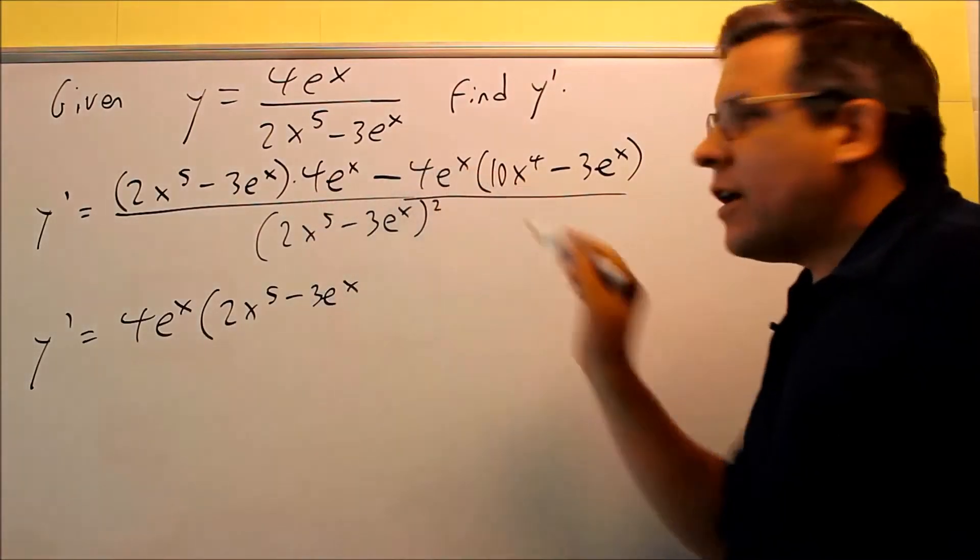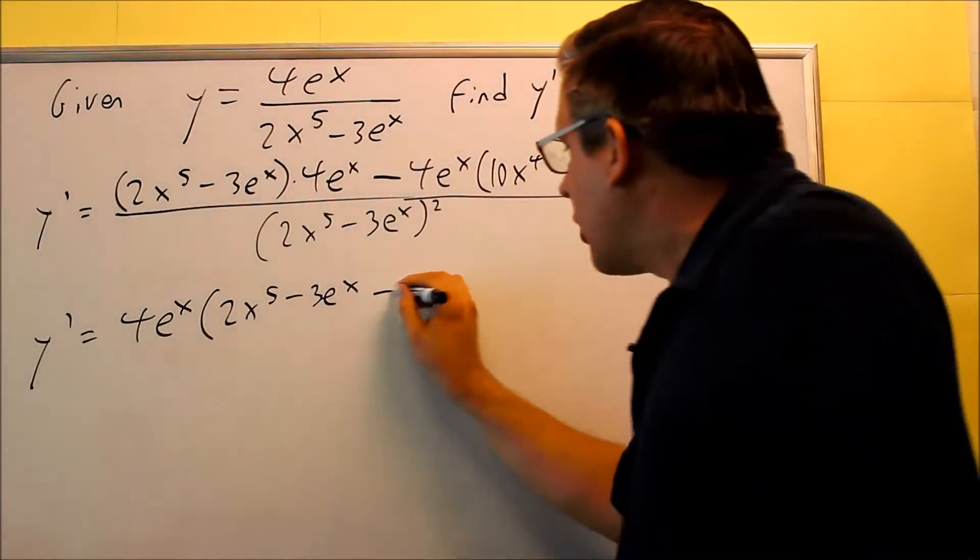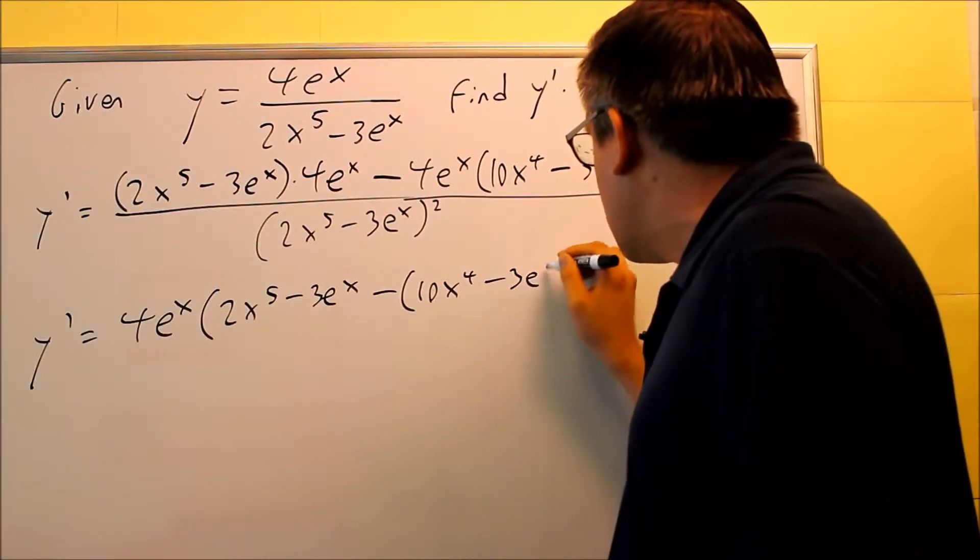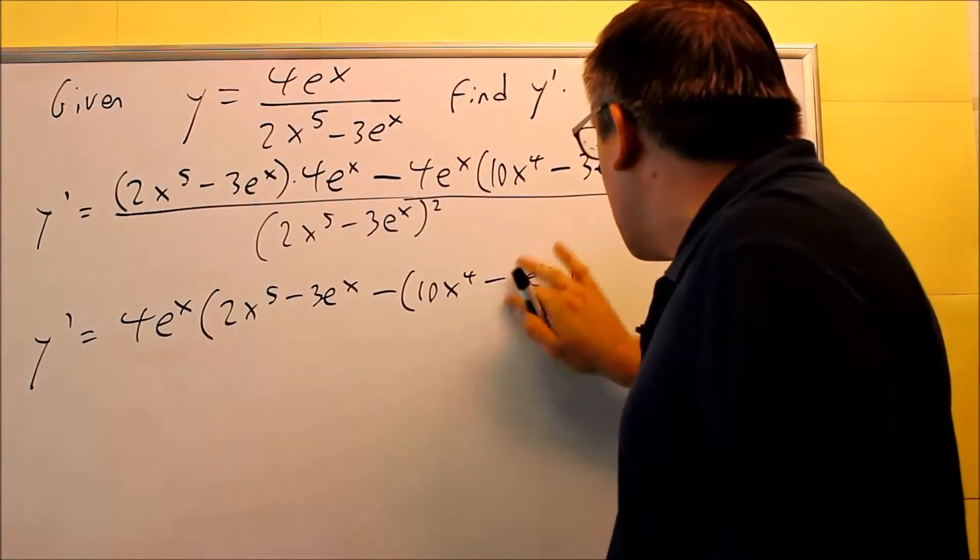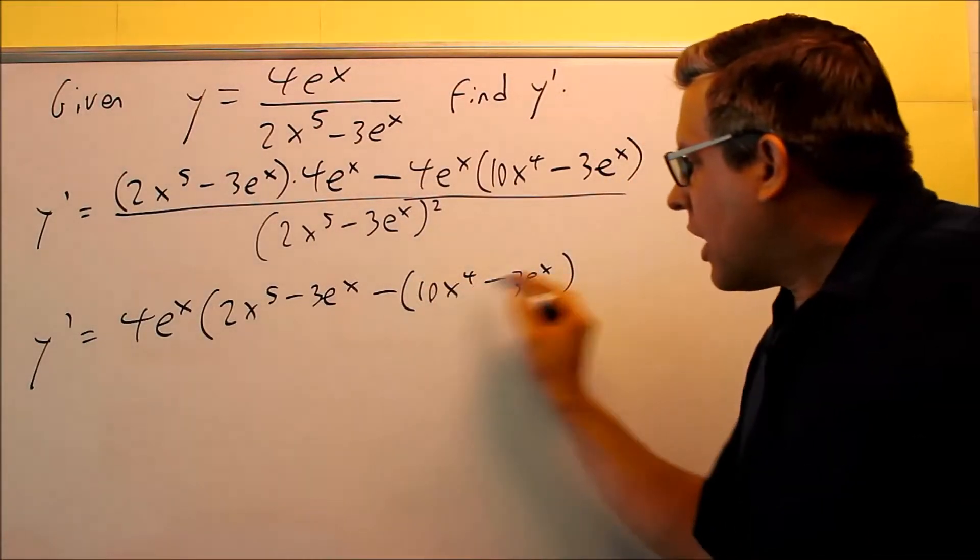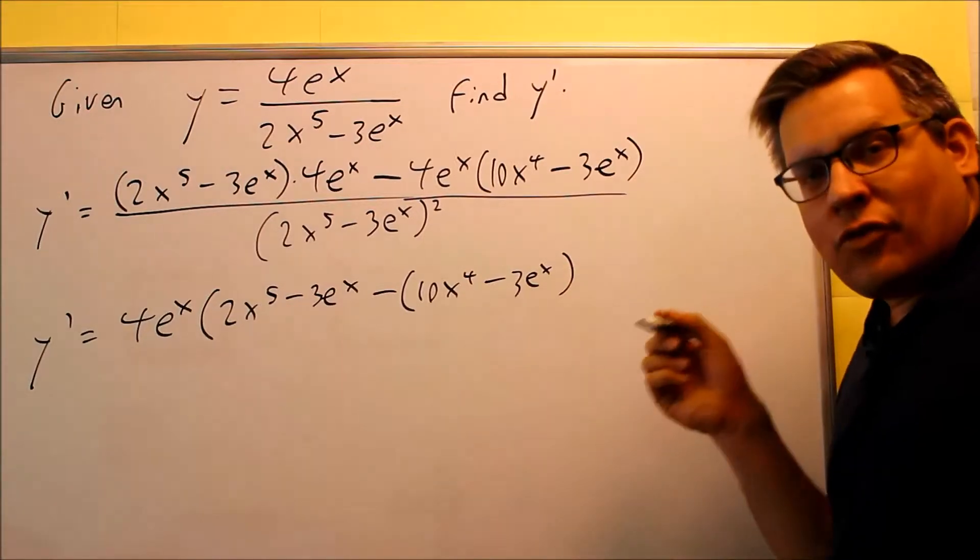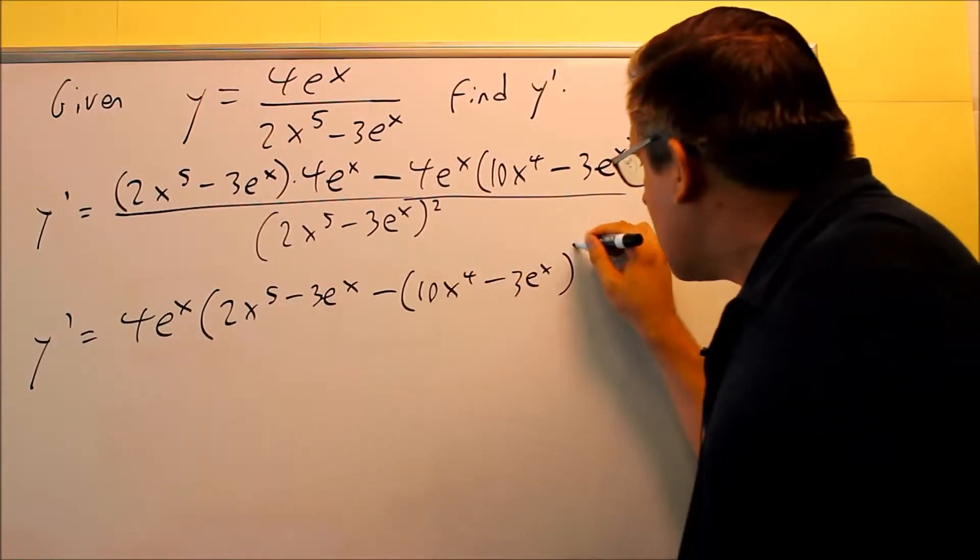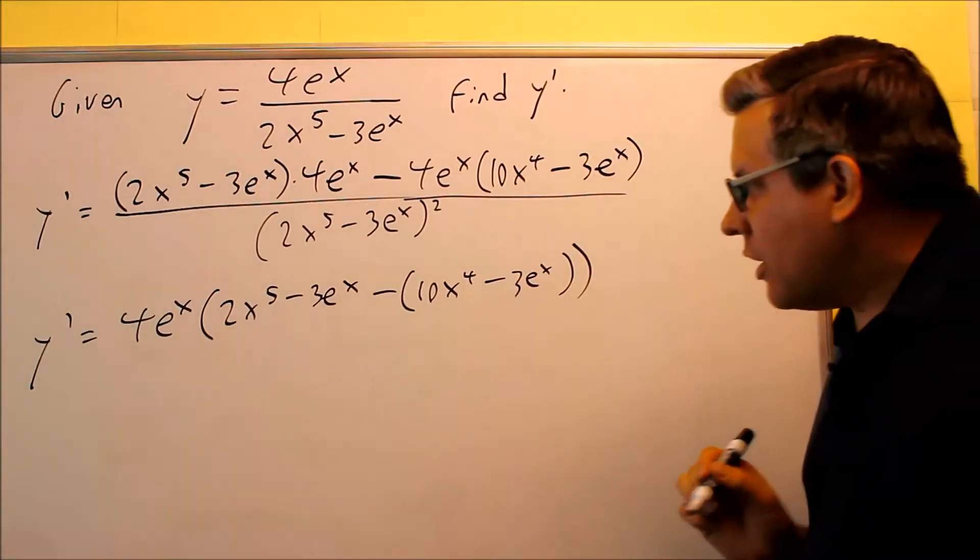But this part has a minus sign in front of it. So I need to put a minus, and all this has to be inside parentheses. Why? Because the negative has to distribute to everything there. So without putting the parentheses, you may forget to do that. And so putting the parentheses there reminds us that we have to distribute the negative sign through.